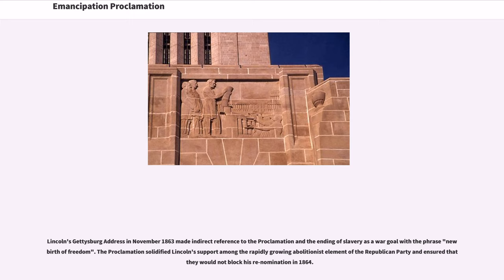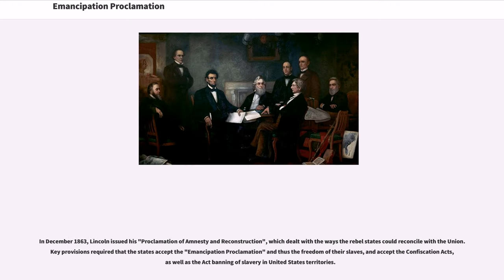The proclamation solidified Lincoln's support among the rapidly growing abolitionist element of the Republican Party, ensuring they would not block his renomination in 1864. In December 1863, Lincoln issued his Proclamation of Amnesty and Reconstruction, which dealt with the ways the rebel states could reconcile with the Union. Key provisions required that the states accept the Emancipation Proclamation and thus the freedom of their slaves, and accept the Confiscation Acts, as well as the act banning slavery in the United States territories.